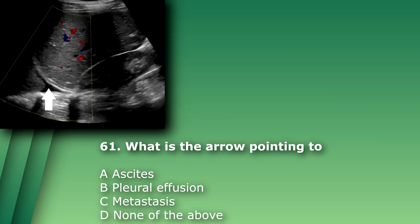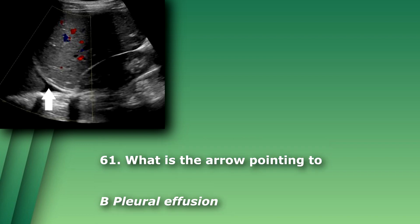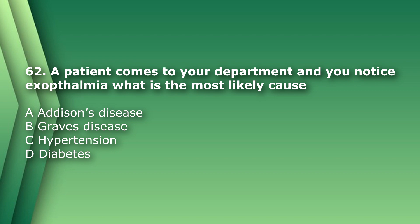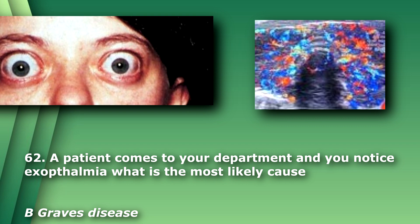Question 61: What is the arrow pointing to? A) ascites, B) pleural effusion, C) metastasis, D) none of the above. The answer is B, pleural effusion. Question 62: A patient comes to your department and you notice exophthalmos — what is the most likely cause? A) Addison's disease, B) Graves disease, C) hypertension, D) diabetes. The answer is B, Graves disease.